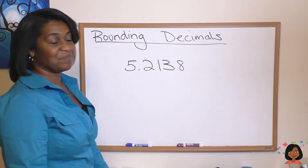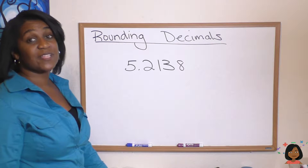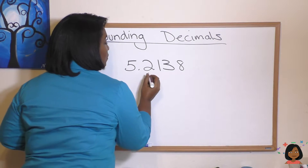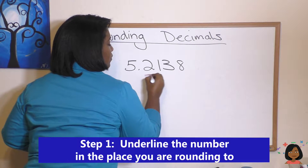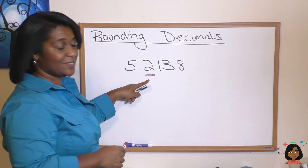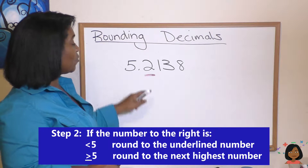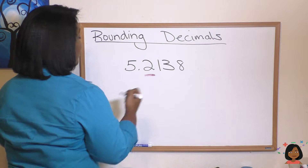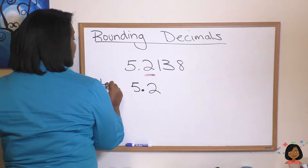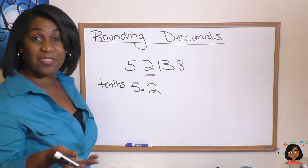I have a nice number here and if I said let's round this number to the tenths place, which I'm going to go ahead and highlight for you, we know that is the 2. First thing we do is we look to the right and we see that that number is 1, so it's less than 5, which means when we round to the tenths place, we're going to keep this as a 5.2. I'm going to write it over here — tenths — just the same way we round with whole numbers.